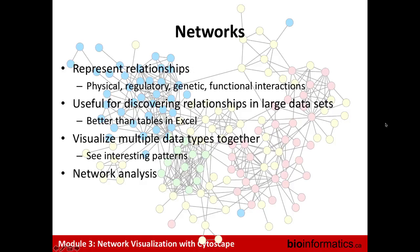Networks are useful for discovering relationships in large datasets. If you just had a few relationships you could draw them out, write A connects to B and B connects to C. But if you have thousands of these things and put them in a spreadsheet, you can't really understand the global structure. Networks allow you to visualize the results, see global structure, and understand how things are related. They also help visualize multiple different data types together — for instance, protein interaction networks with gene expression data overlaid.